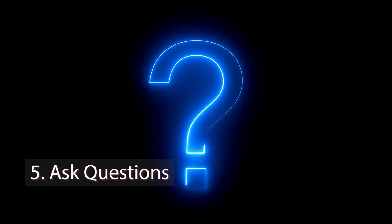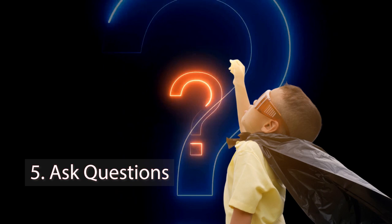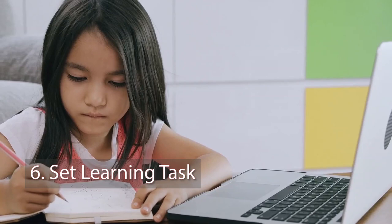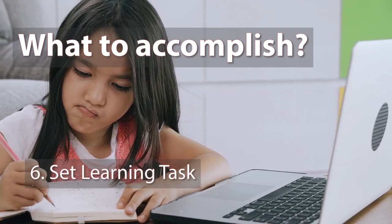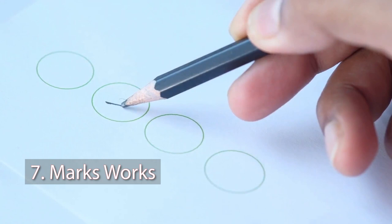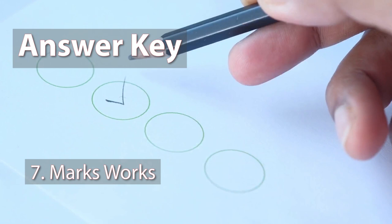Number five, ask questions. The module should contain questions, preferably in the higher-order thinking level, to steer the student's imagination and curiosity regarding the lesson. Number six, set learning tasks. The teacher should provide a clear direction as to what the students should accomplish within the session. Number seven, mark works. Despite the physical absence of the teacher, a learning module should have the answer key and a scoring guide for learners to mark their work and know their current progress.